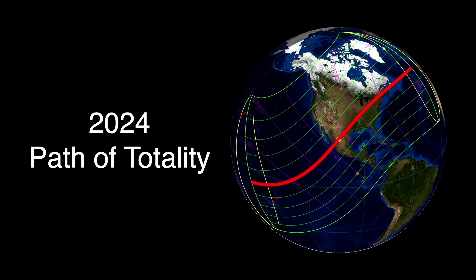If you're outside the red line, you'll only see a partial eclipse. The yellow dot is the location of maximum eclipse duration, which is very near to one of our observing sites in Torreon, Mexico.